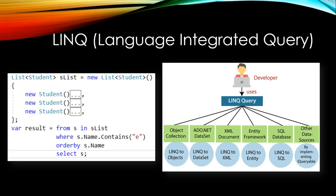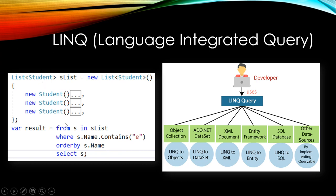LINQ stands for Language Integrated Query. It's available with the .NET Framework since version 3.5, which means from around 2007. It provides SQL-like syntax to query any type of collection. Here is an example of a LINQ query applied on a list of students — a user-defined class — where we can write SQL-style syntax, select properties through the object, and filter out results from the list.